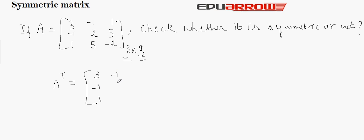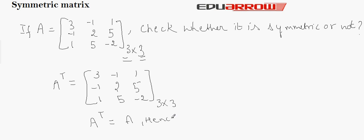After interchanging, the transpose comes out as 1, 5, 1, 2, and the order remains the same. Here we see that the transpose of A is equal to A. Hence it is a symmetric matrix.